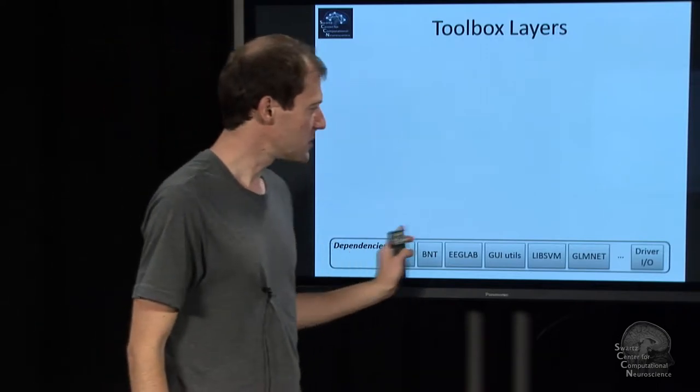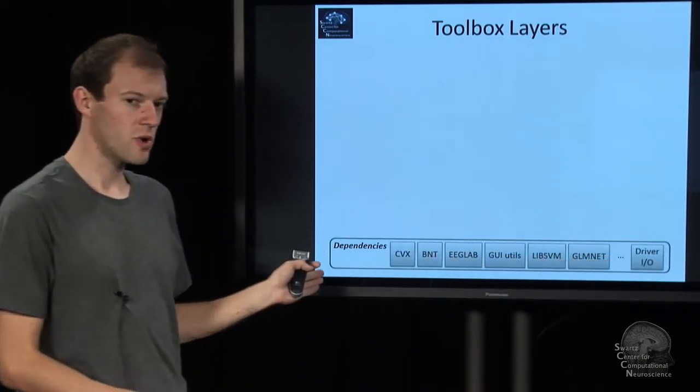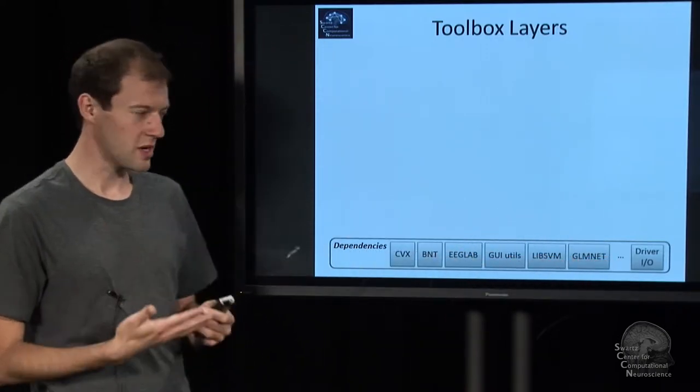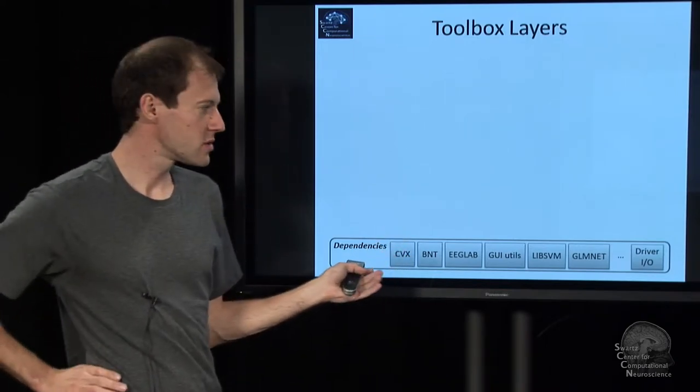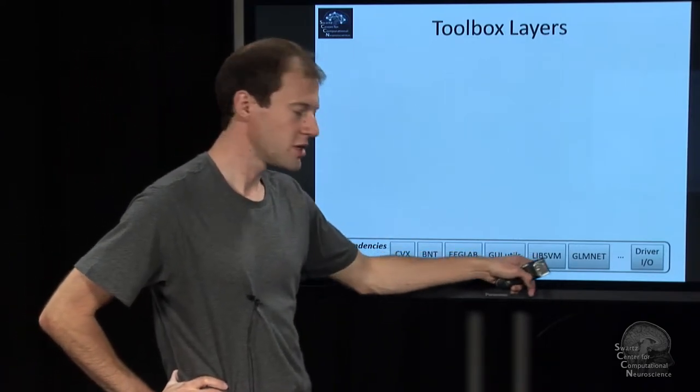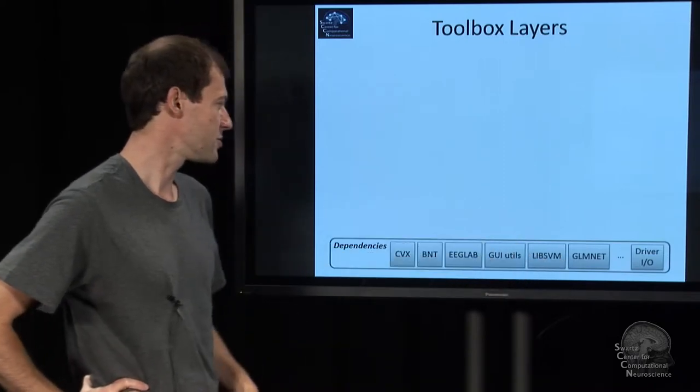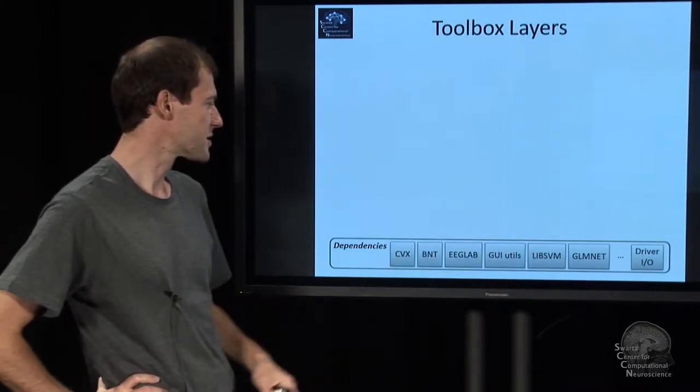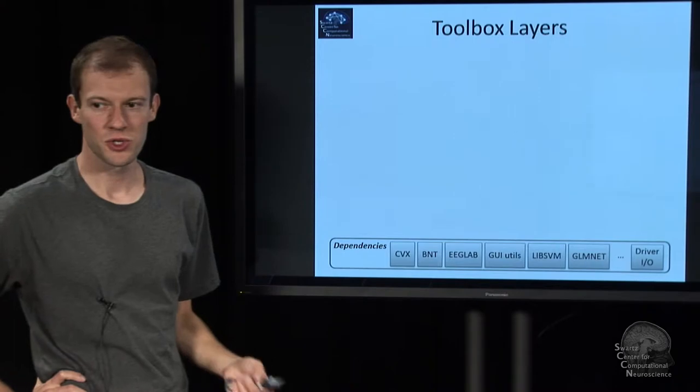So there's some dependencies, dependent toolboxes that are externally maintained, not by us necessarily, but that are included with the download. That includes things like certain machine learning tools, like support vector machines, CVX. It includes EEGLab as well, which is a dependency.